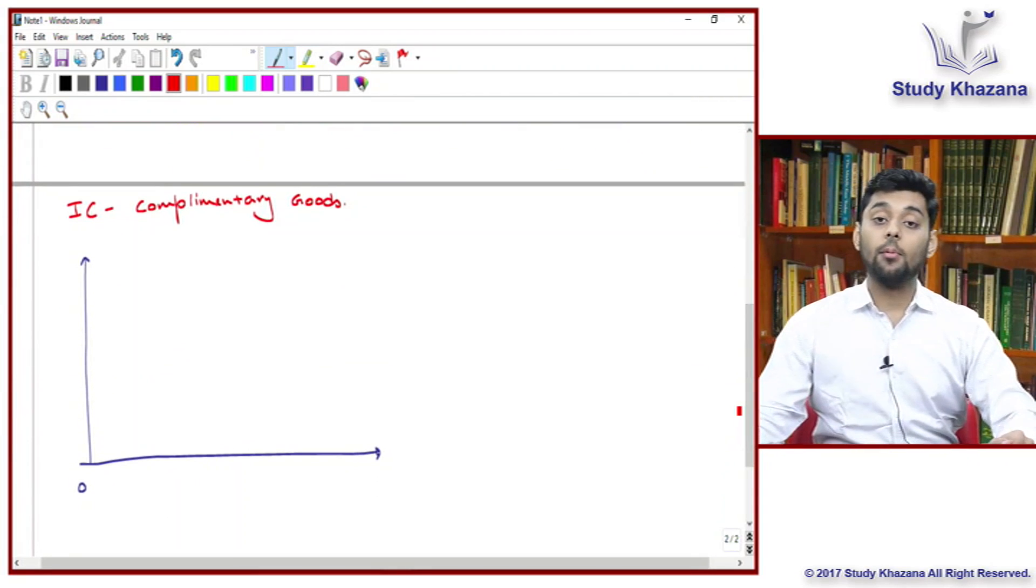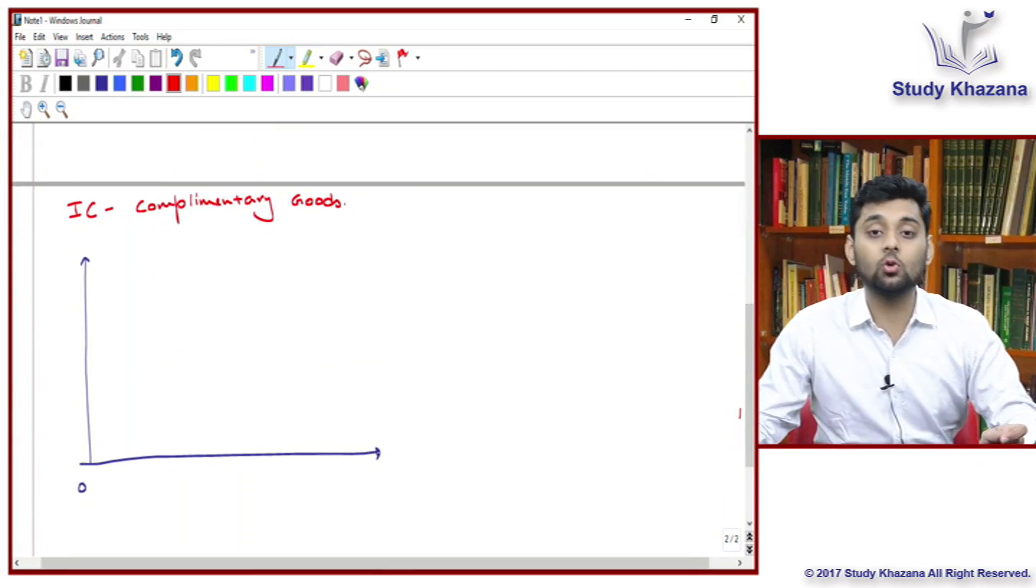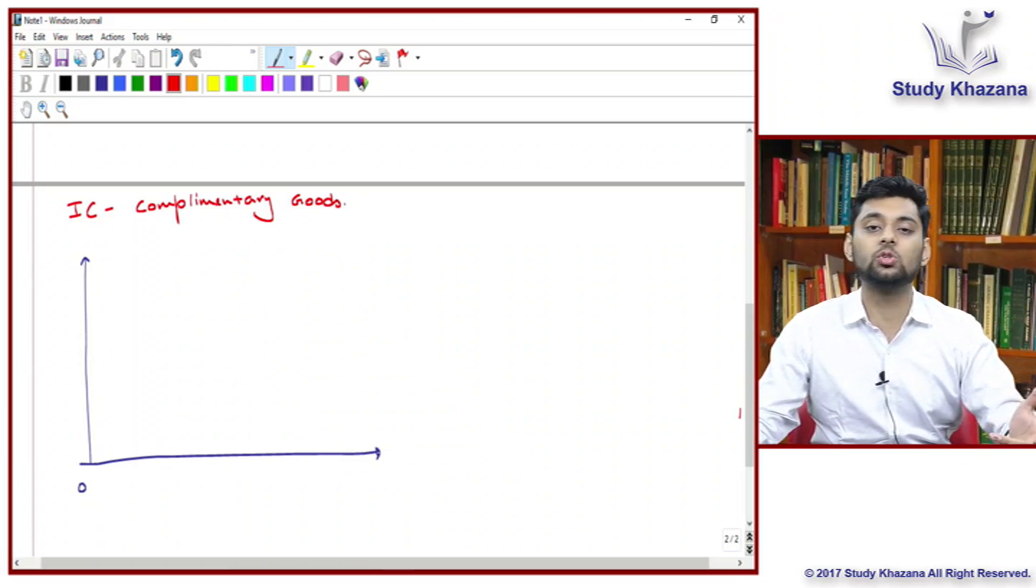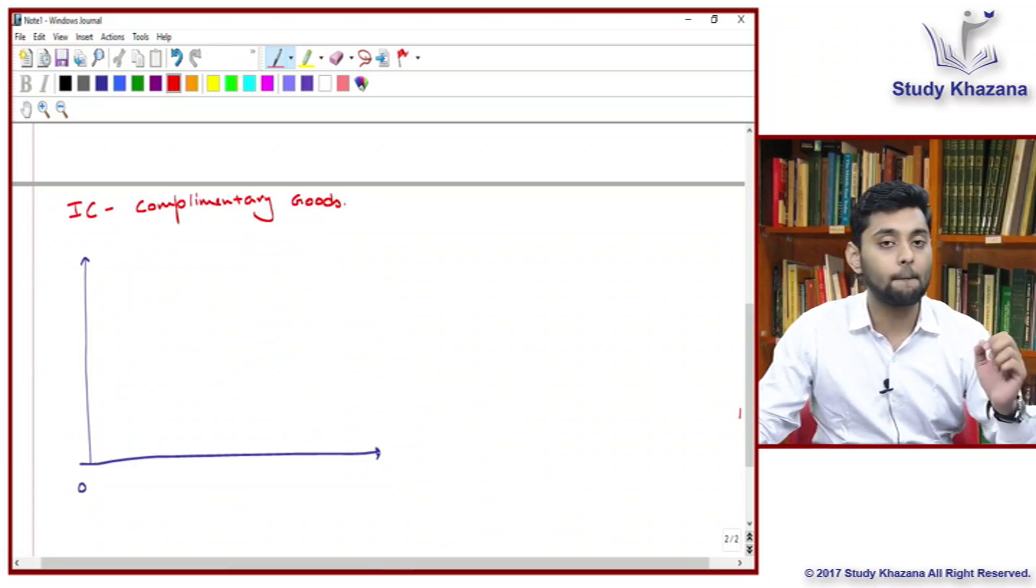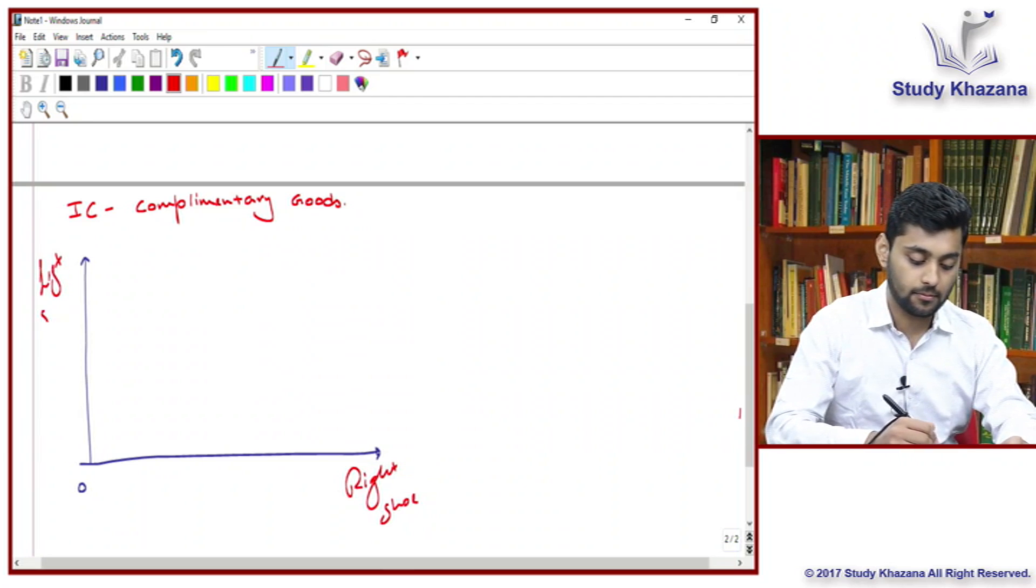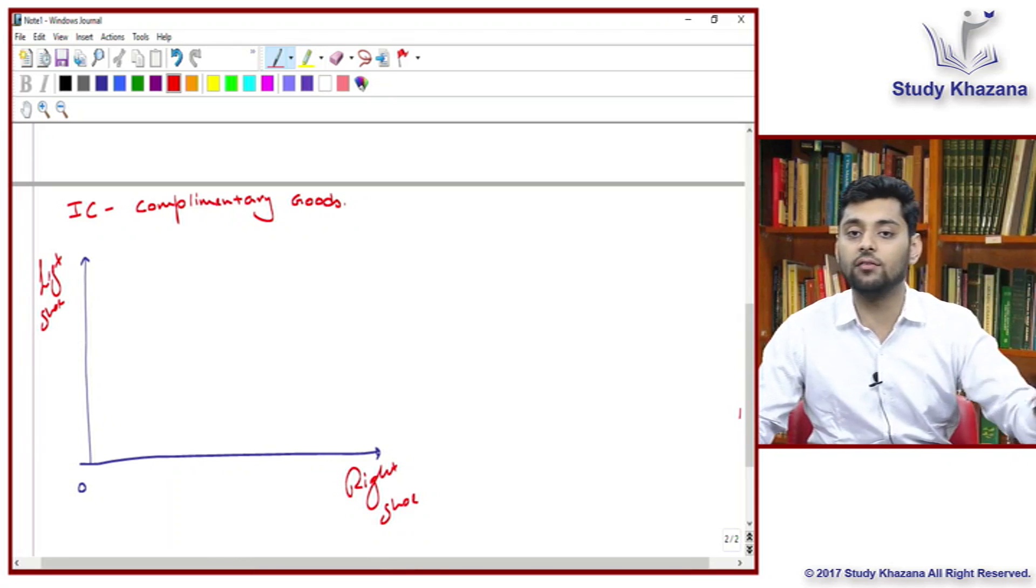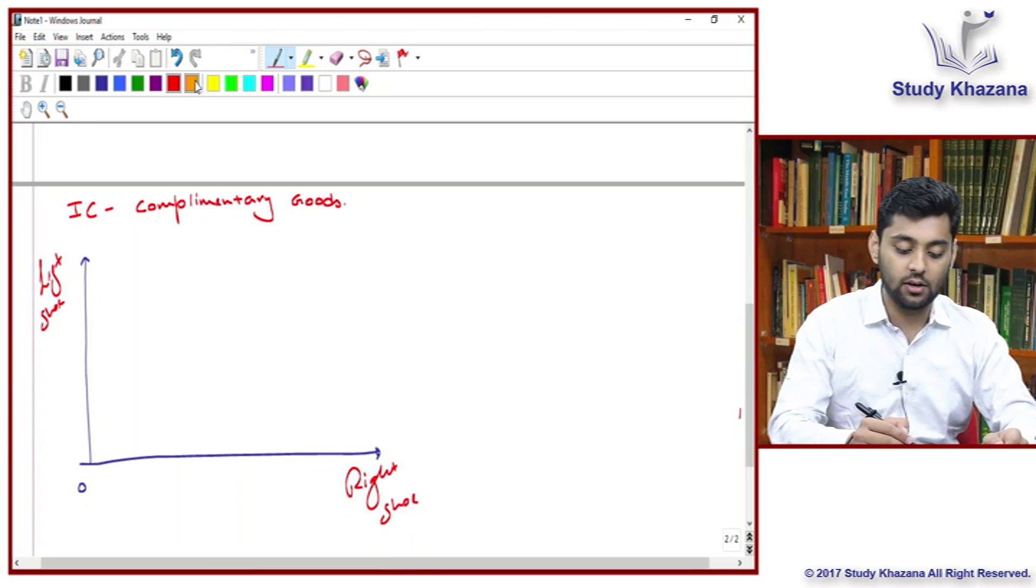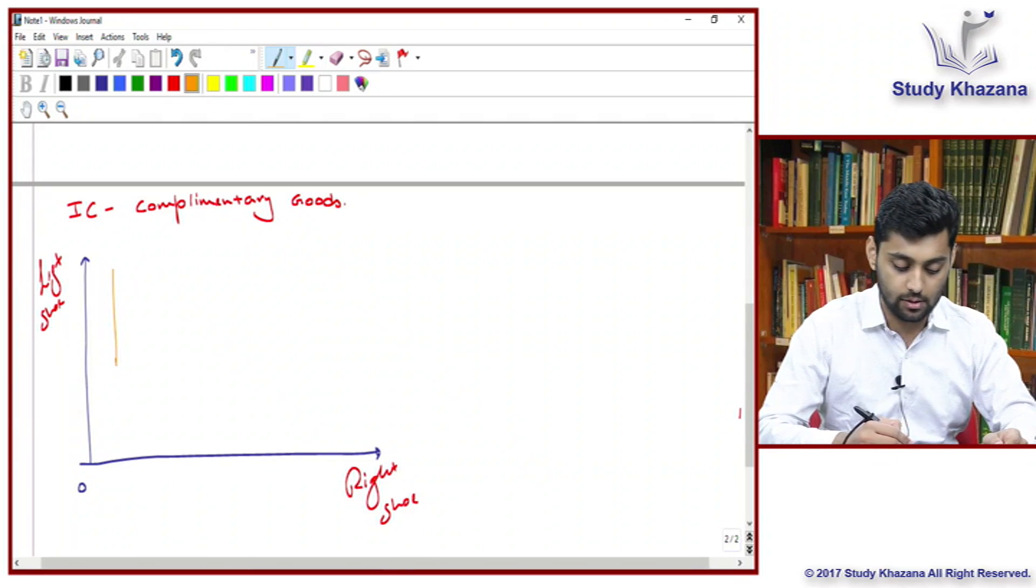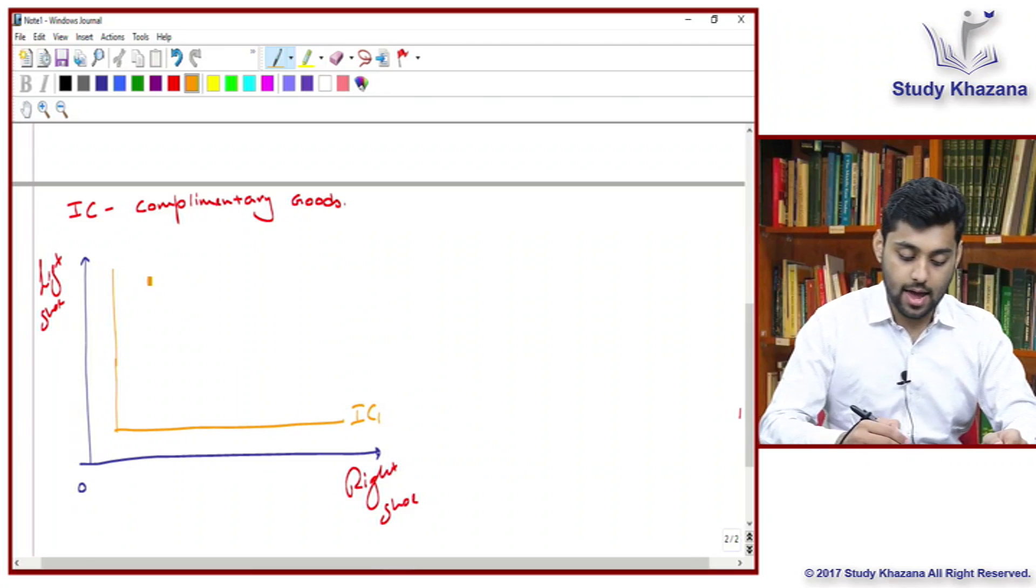Let's start with the case of perfectly complementary goods. Complementary goods are those goods which are always jointly demanded. Jointly demanded means you cannot use one good in the absence of another. The best example is the right shoe and the left shoe. Of course you cannot use any one of them without having the another.